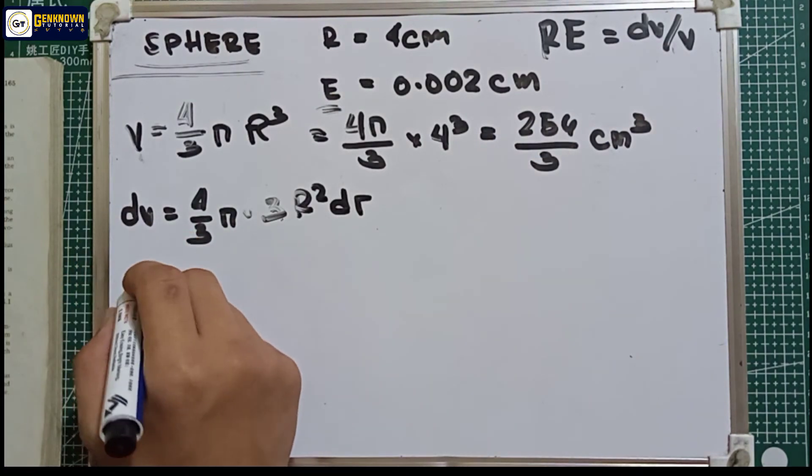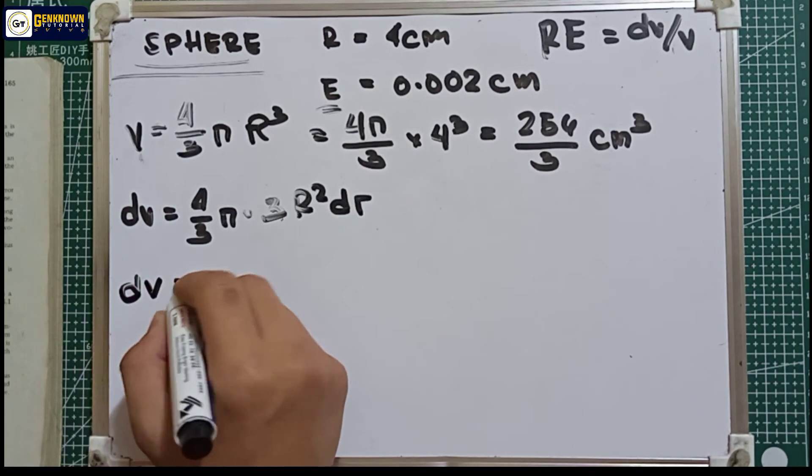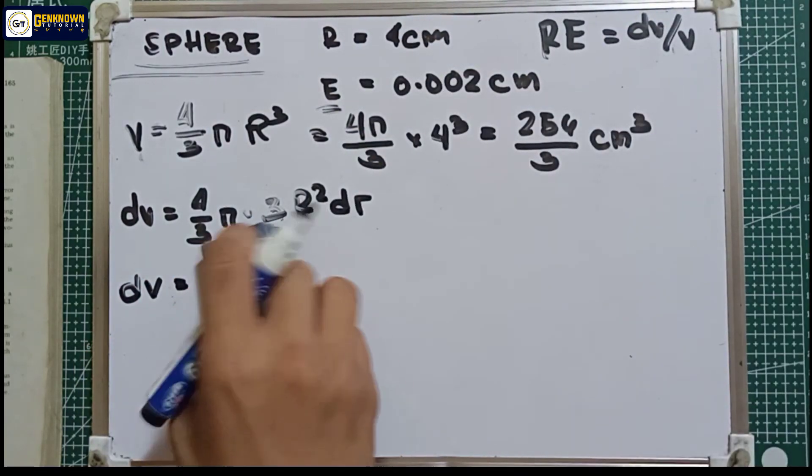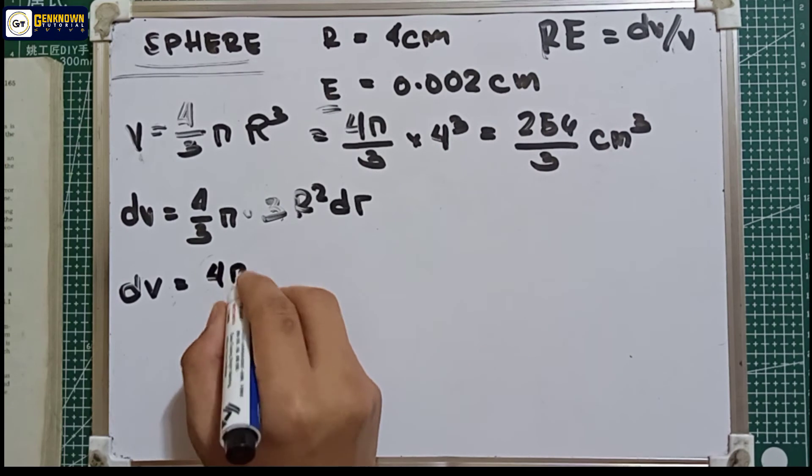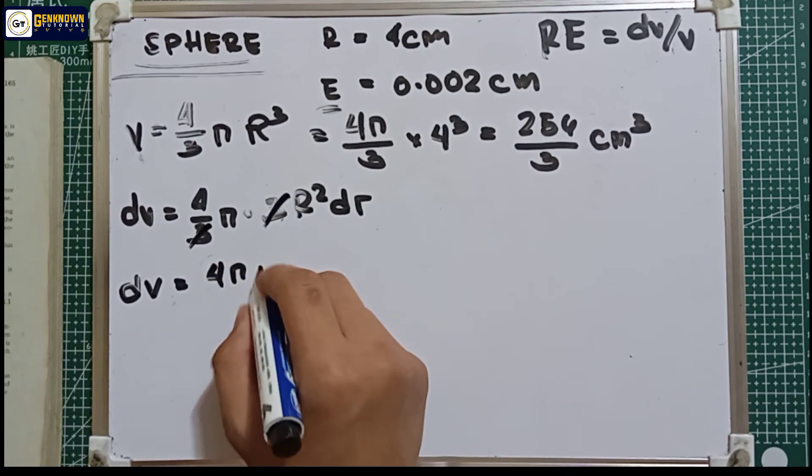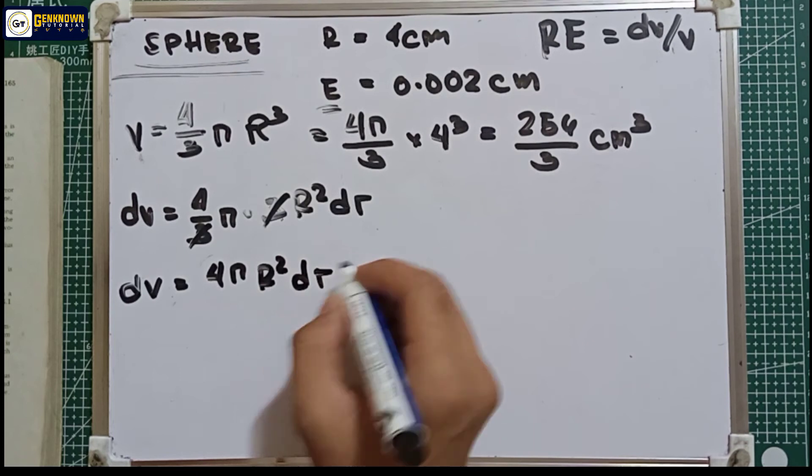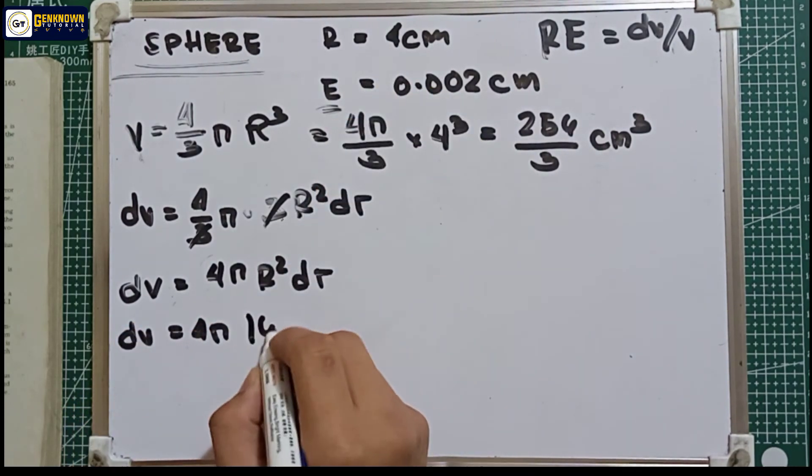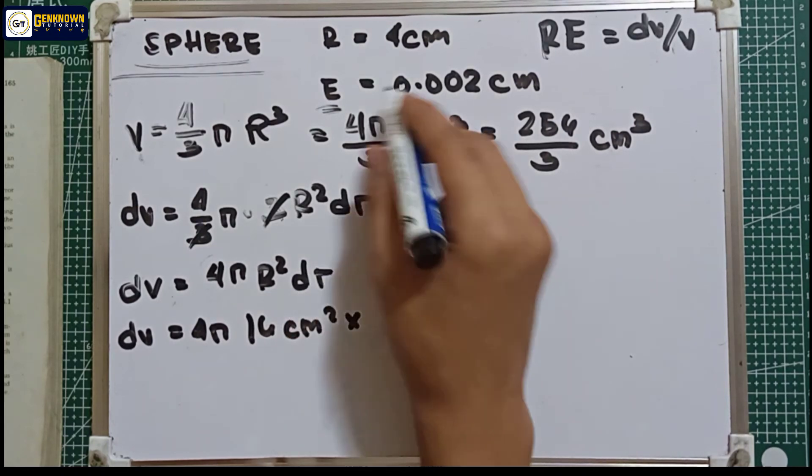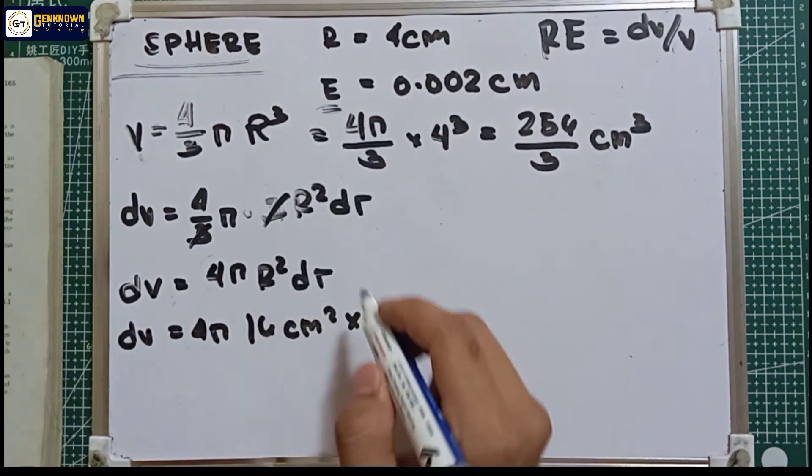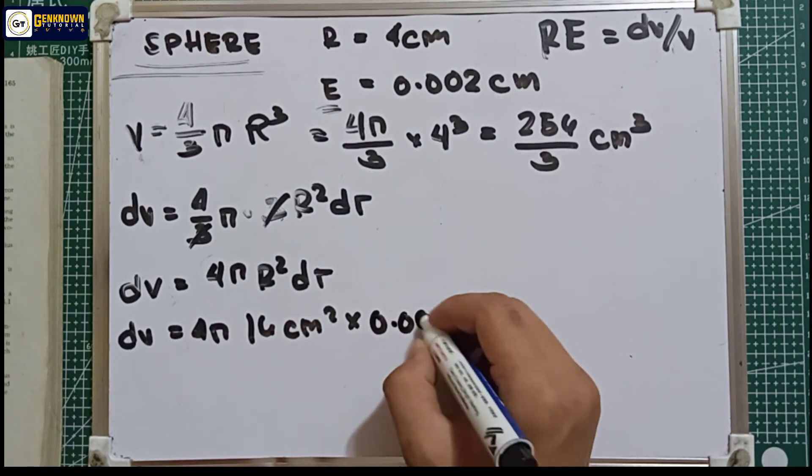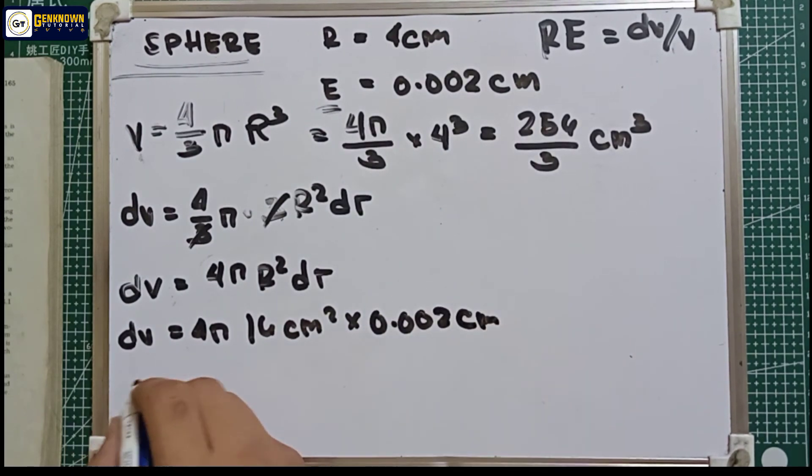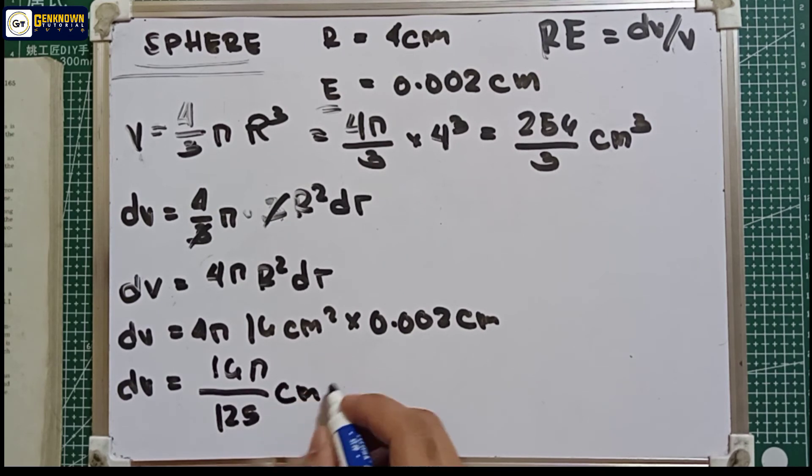to find the value of dv. dv is equal to 4π (since 3 over 3 becomes 1) times r² dr. So dv is equal to 4π times r², which is 16 cm², multiplied by dr or the error 0.002 cm. So the value of dv is equal to 16π/125 cm³.